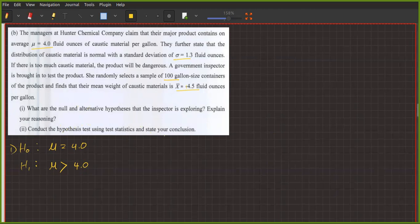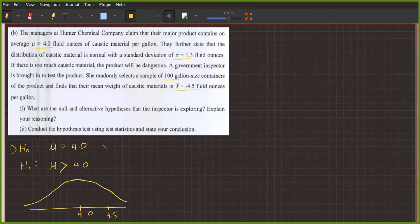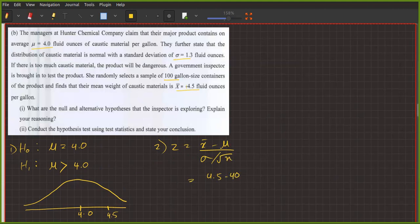Conduct the hypothesis test using the statistic and state your conclusion. So we have to check the data. The z value: z equals x bar minus μ over σ divided by square root of n. So 4.5 minus 4.0 divided by 1.3 over square root of 100, and this gives us z equals 3.85.